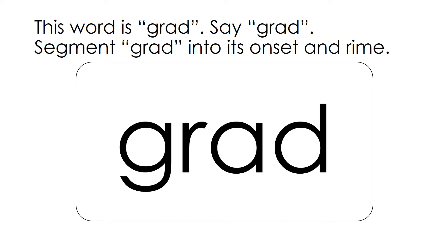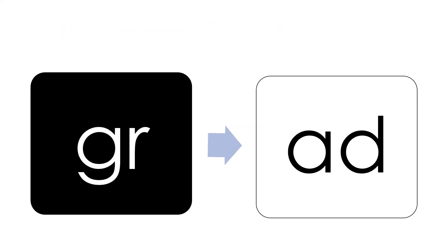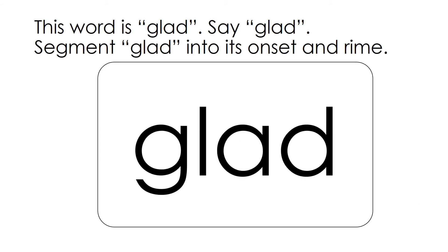This word is Grad. Say Grad. Segment Grad into its onset and rhyme: GR-AD. This word is Glad. Say Glad. Segment Glad into its onset and rhyme: GL-AD.